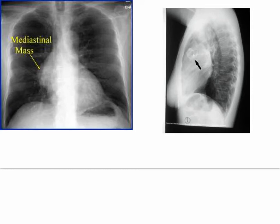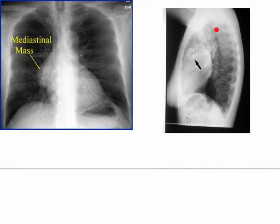These images are not from our case - the case images are copyrighted - but this is a middle mediastinal mass where we've lost the silhouette sign from the heart. We do the lateral view and can identify the sternum, the breast shadow, confirming we're in the anterior mediastinum, then the heart, and then the posterior mediastinum. These are two examples of thymomas - both pictures show thymomas.